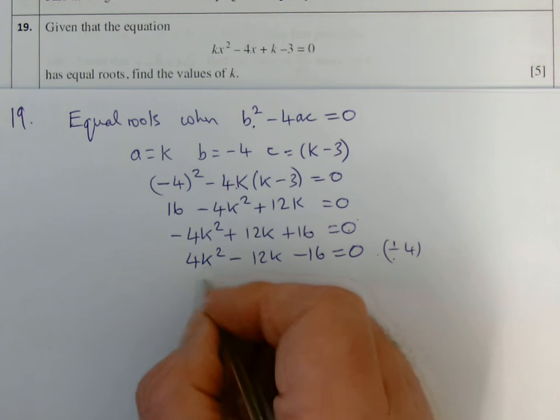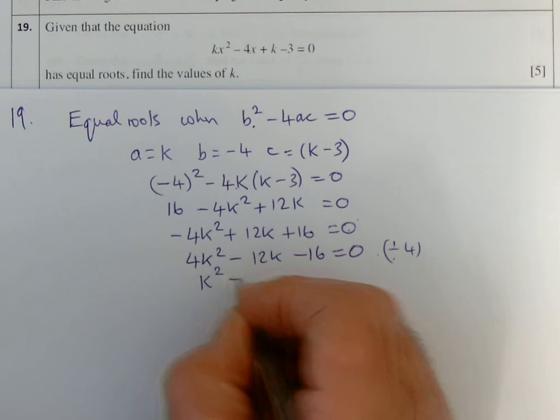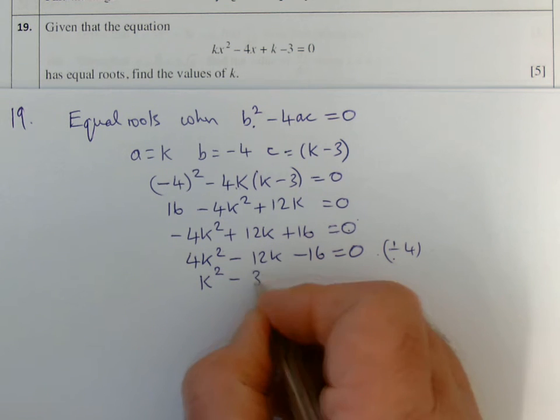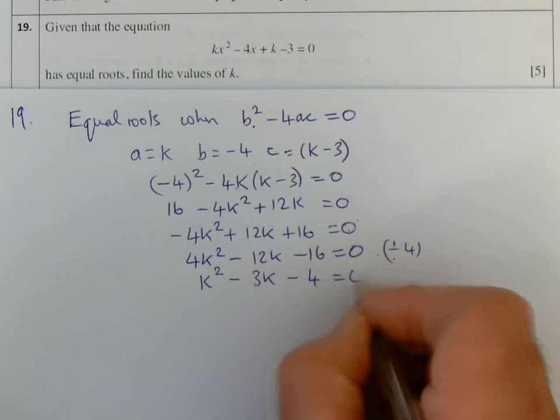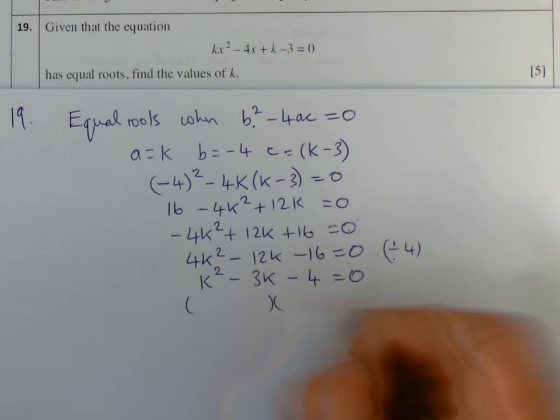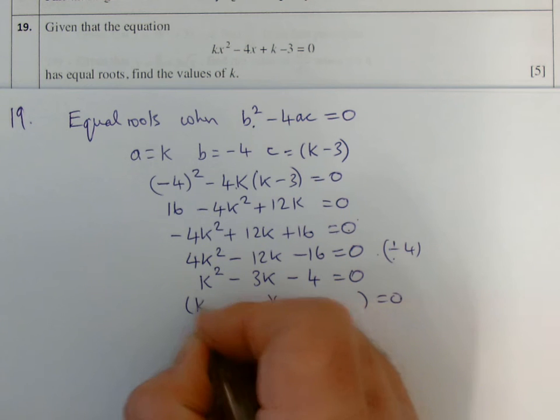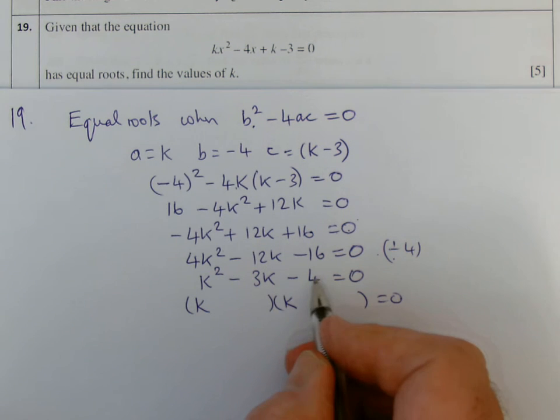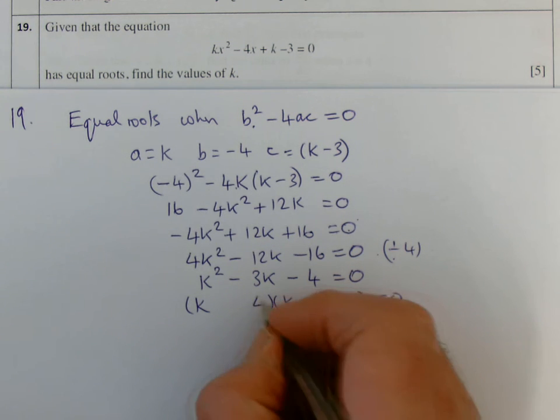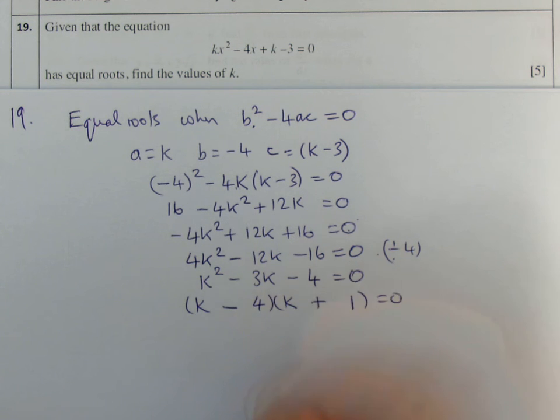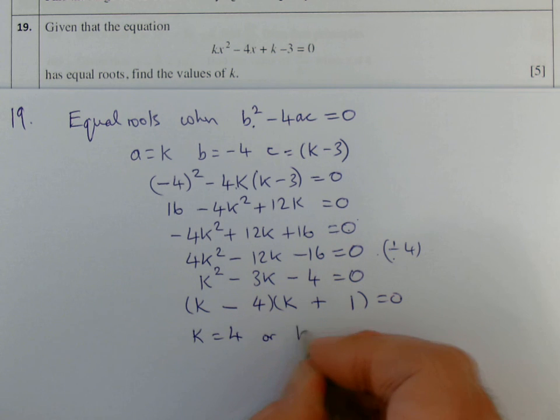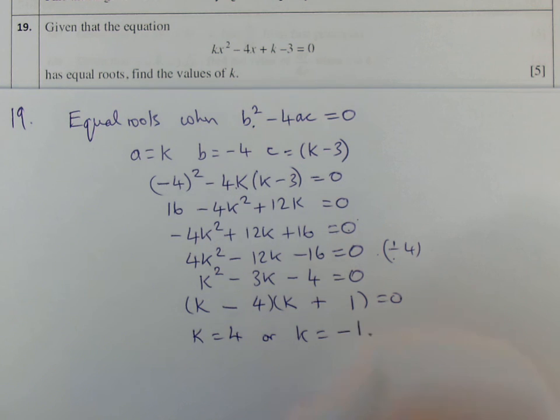I can also divide by 4. 4 is the factor of all those three numbers. So that's k squared minus 3k minus 4. And then to factorise it, k in each, times to give 4, subtract to give 3. So that would be 4 and 1. And I want minus 3, so it would be minus 4 plus 1. So the value is k then. So k will equal 4 or k will equal minus 1.